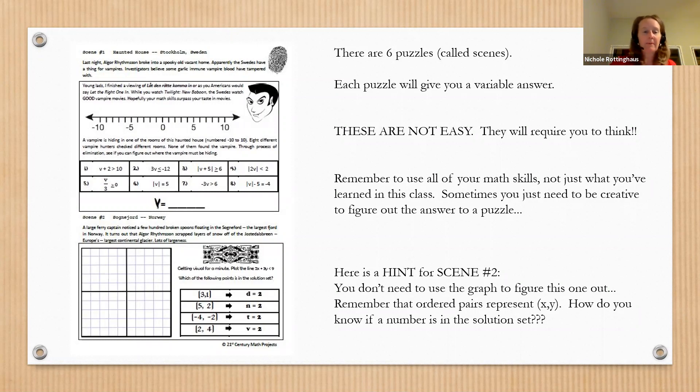Then you're going to go to puzzle number two, scene number two, and solve that one. Then there's scene three and four and five and six. So there's six different scenes, and each one's going to give you an answer that's a variable.